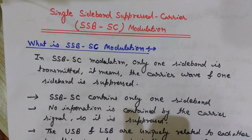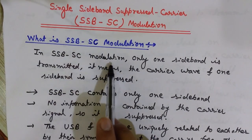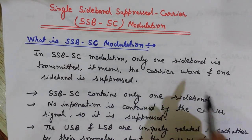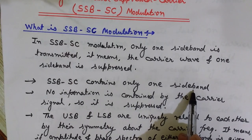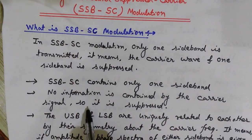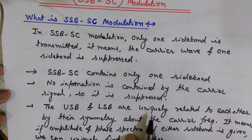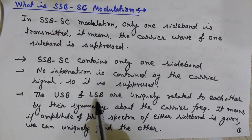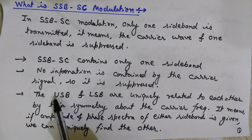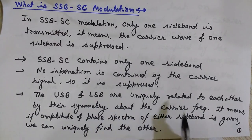In SSB-SC modulation, only one sideband is transmitted — the carrier wave and one sideband are suppressed. No information is contained by the carrier signal, so it is suppressed. The two sidebands are called upper sideband (USB) at frequency ωc + ωm, and lower sideband (LSB) at frequency ωc − ωm.